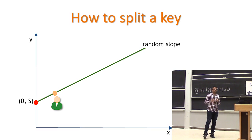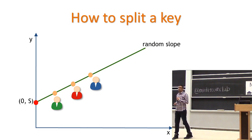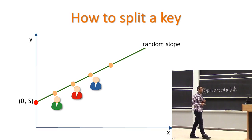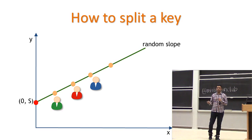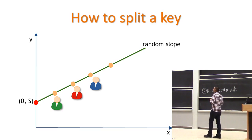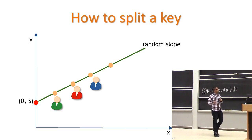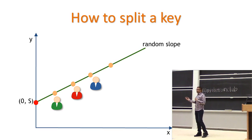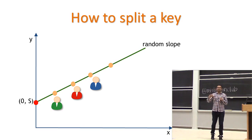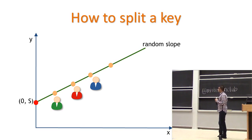A single user can't compromise the system; a single device gets hacked — can't compromise the system. But here's what's cool: you keep doing this, giving different points to different users. Any two of them come together, draw a line through their two points, see where it intersects the y-axis, and reconstruct the key. This is the key mathematical intuition behind how any one person can't do any damage, but any two people can reconstruct the secret. And it's not just two out of three — it's any M out of any number. For M=3, instead of a line, you draw a parabola; you'd need three points to reconstruct it, and fewer than three points gives you no information.